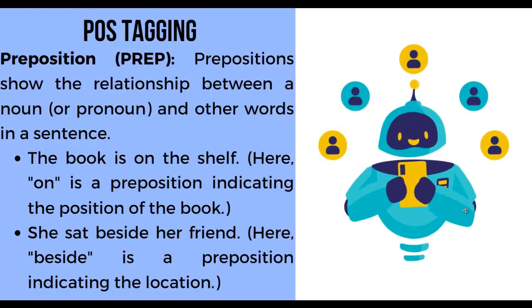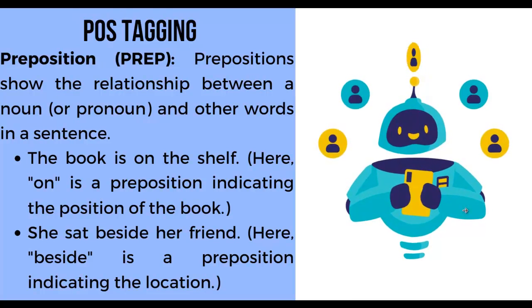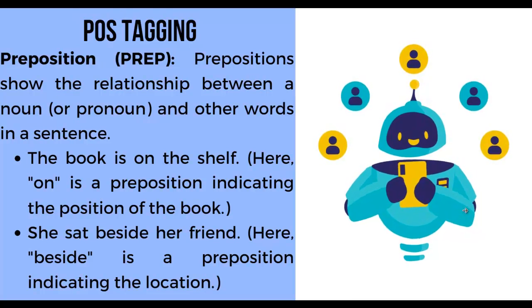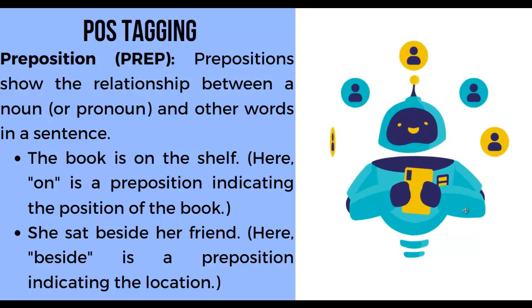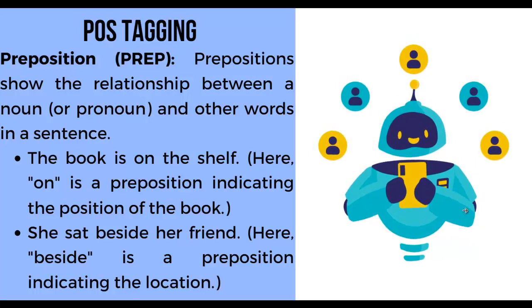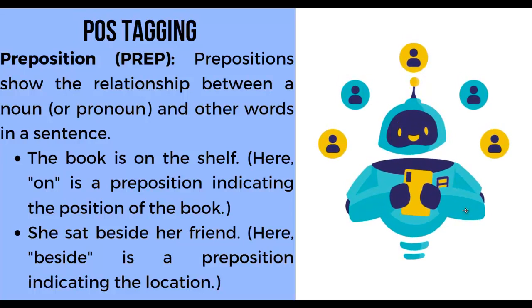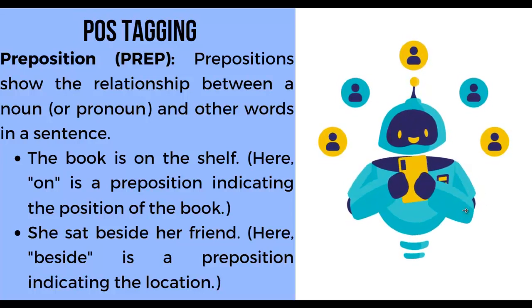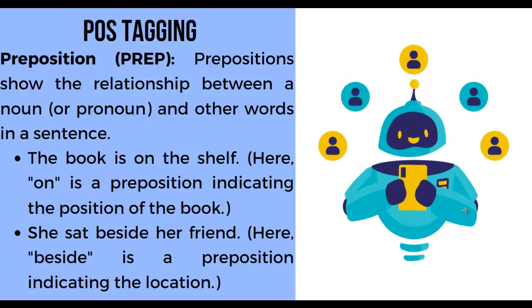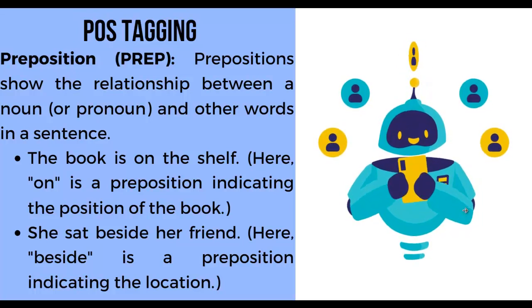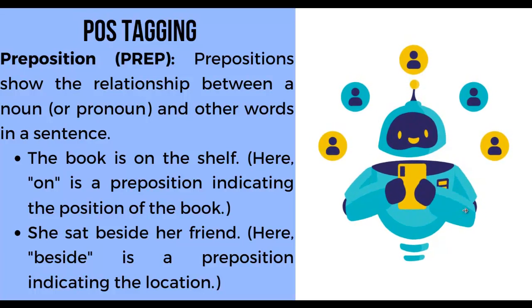Next, preposition. Prepositions show the relationship between a noun or pronoun and other words in a sentence. First example: 'The book is on the shelf' — here, 'on' is a preposition indicating the position of the book. Second example: 'She sat beside her friend' — here, 'beside' is a preposition indicating the location.